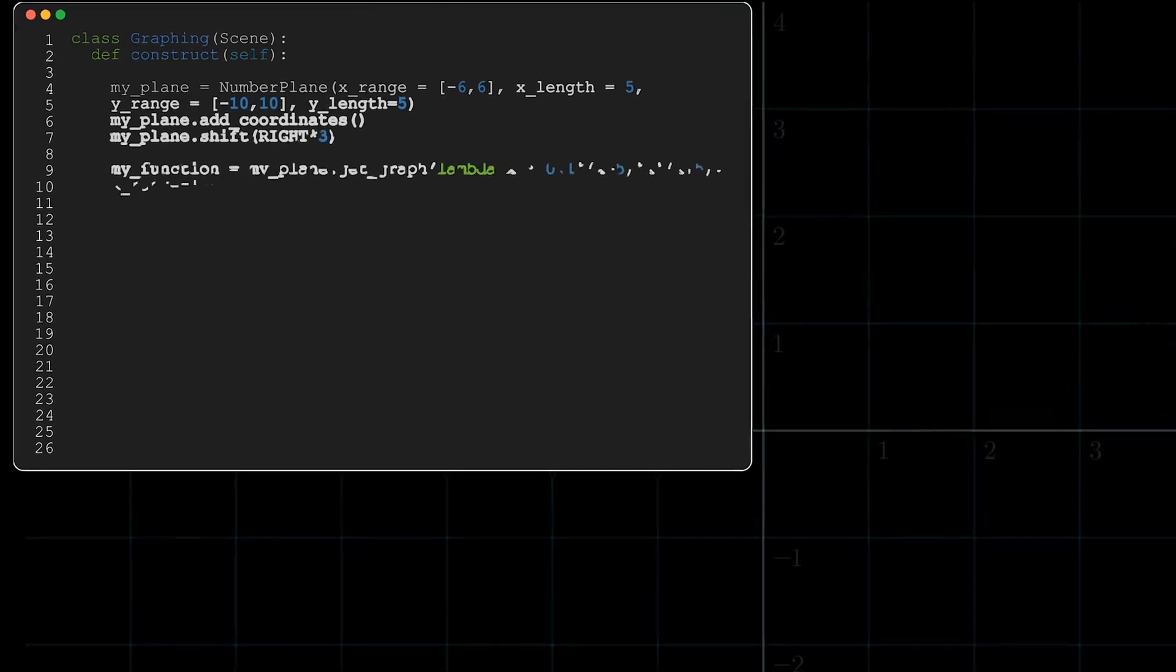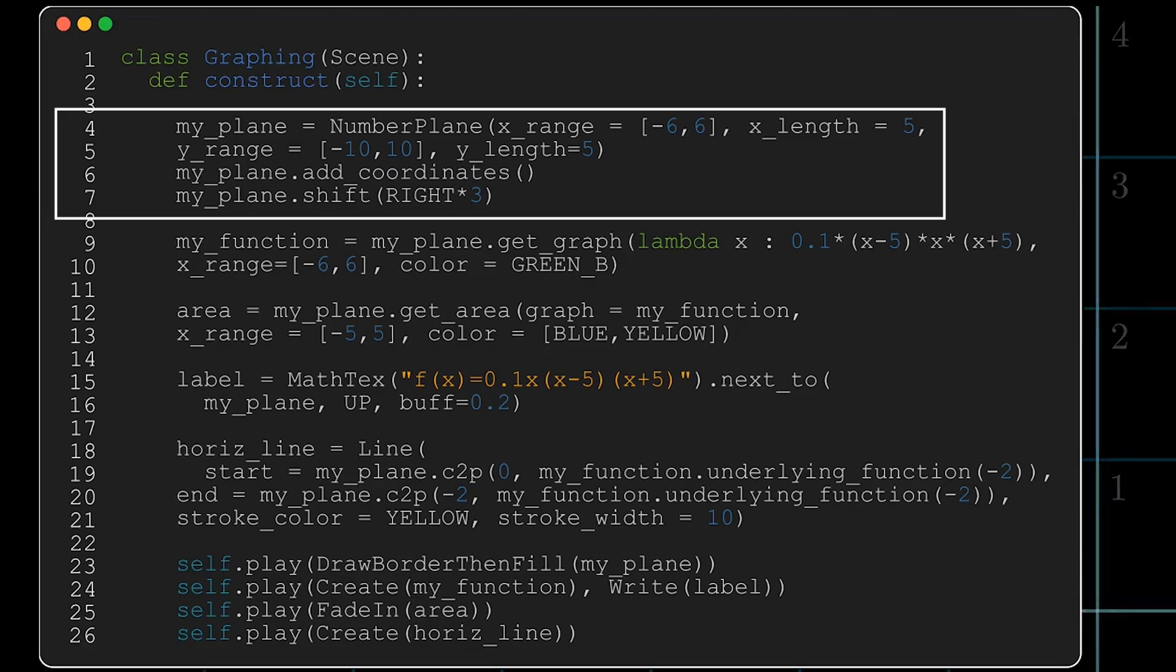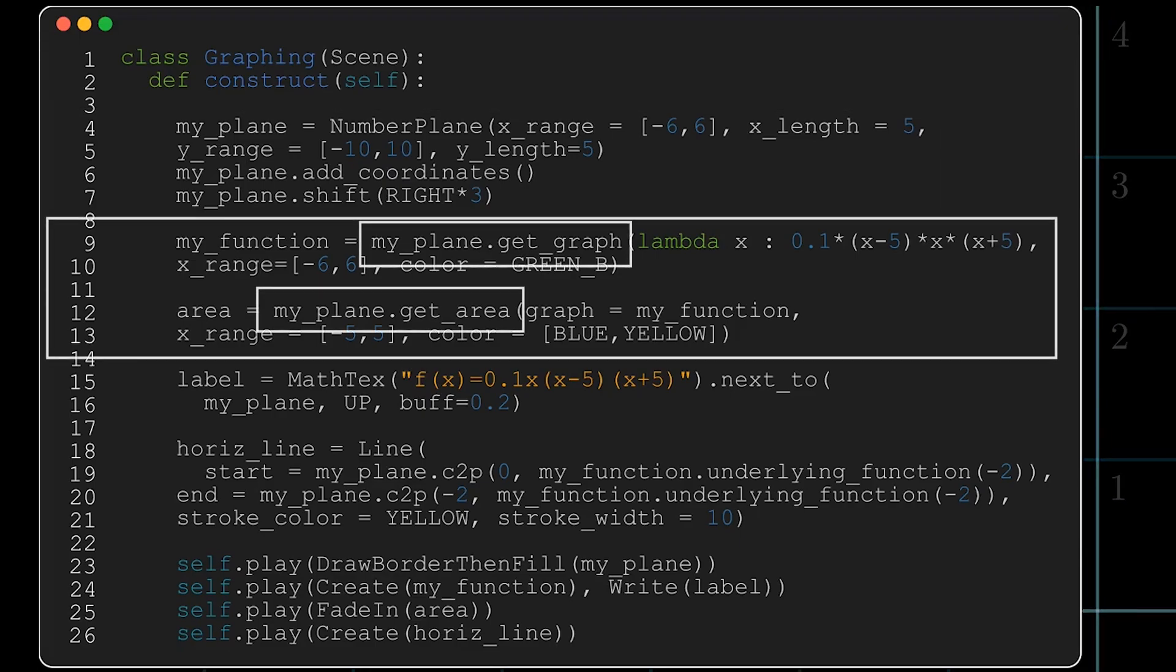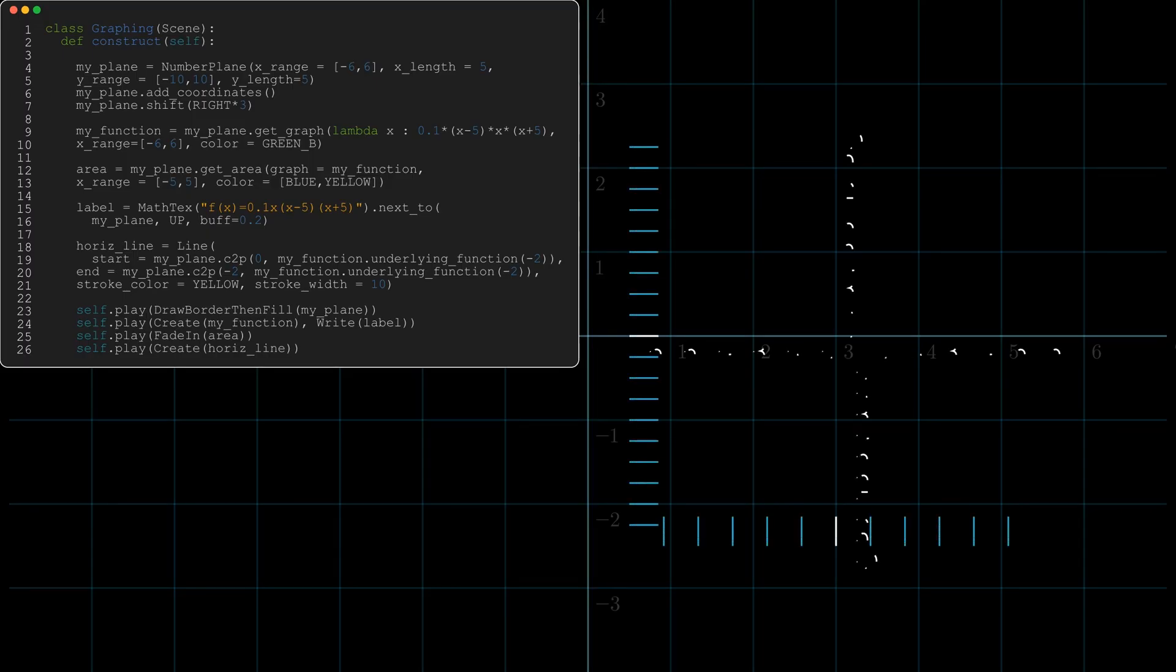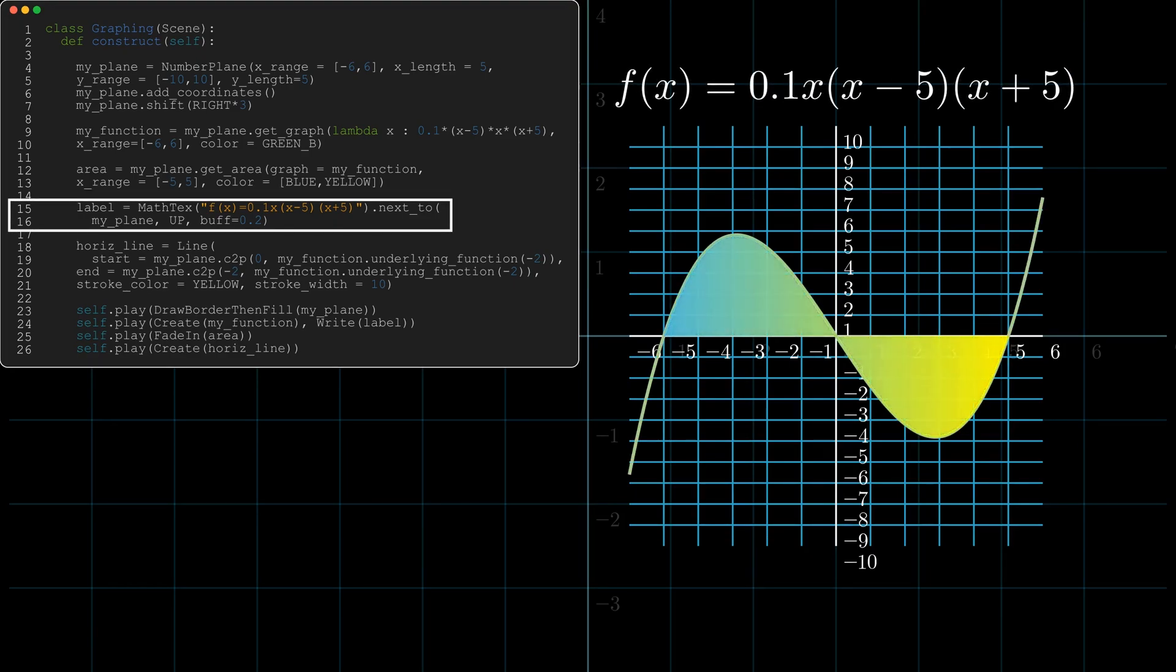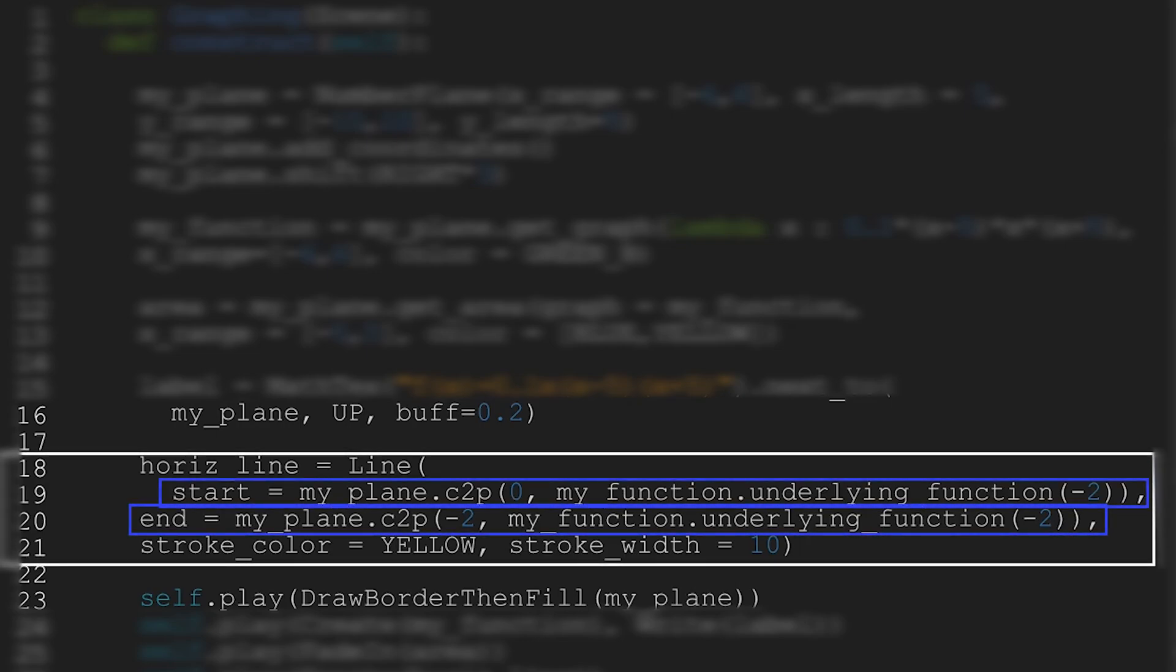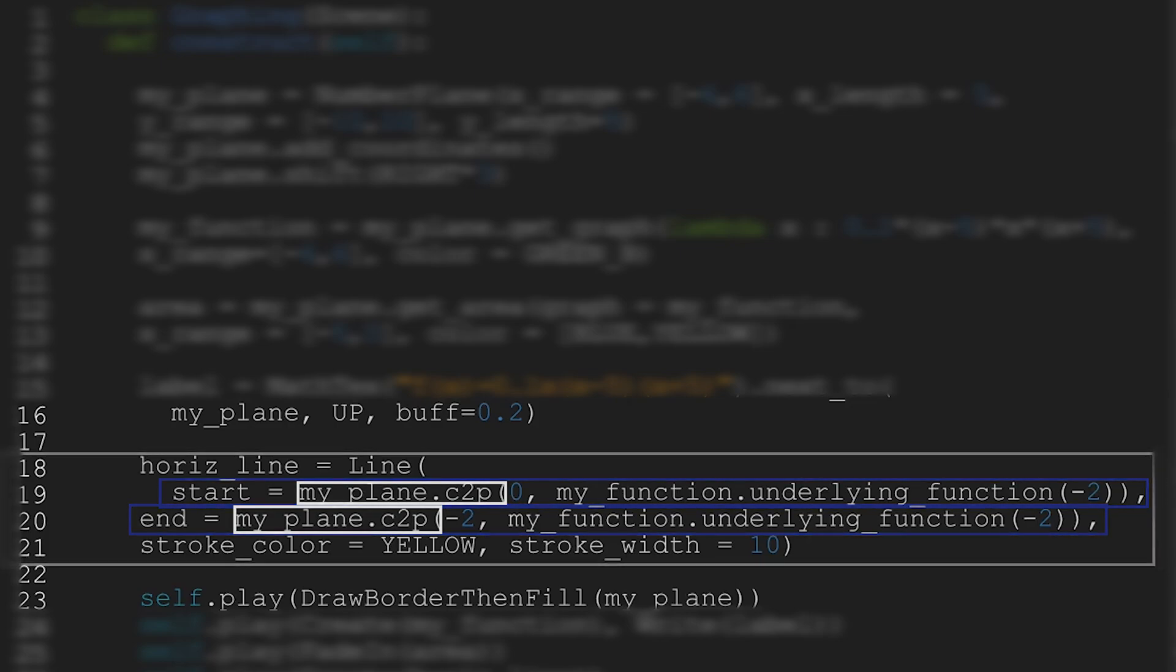Looking into a different example here, we're going to be using a number plane. We're going to call a function on our plane and we're also going to call an area under the curve. Now the nice part here is that MANIM has got some built-in functions, but if you're calling them onto the number plane, you must use the name of your number plane. What I've also done here is created a label for my function, and I've moved it up from the plane. You'll also see the last part of this code, I've got a horizontal line, which I've just defined as a line by calling the start and the end points from my_plane.c2p, which stands for coordinate to point.